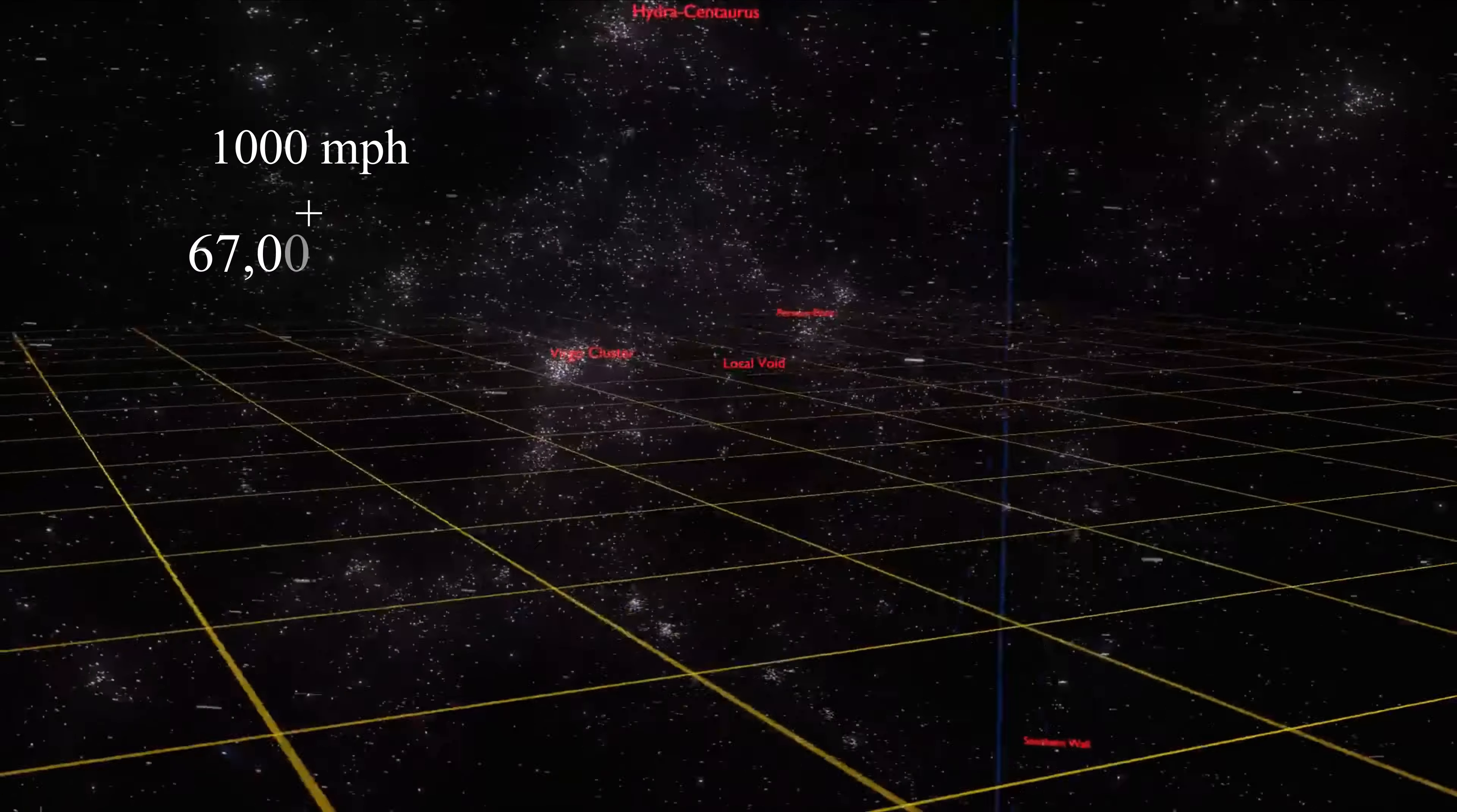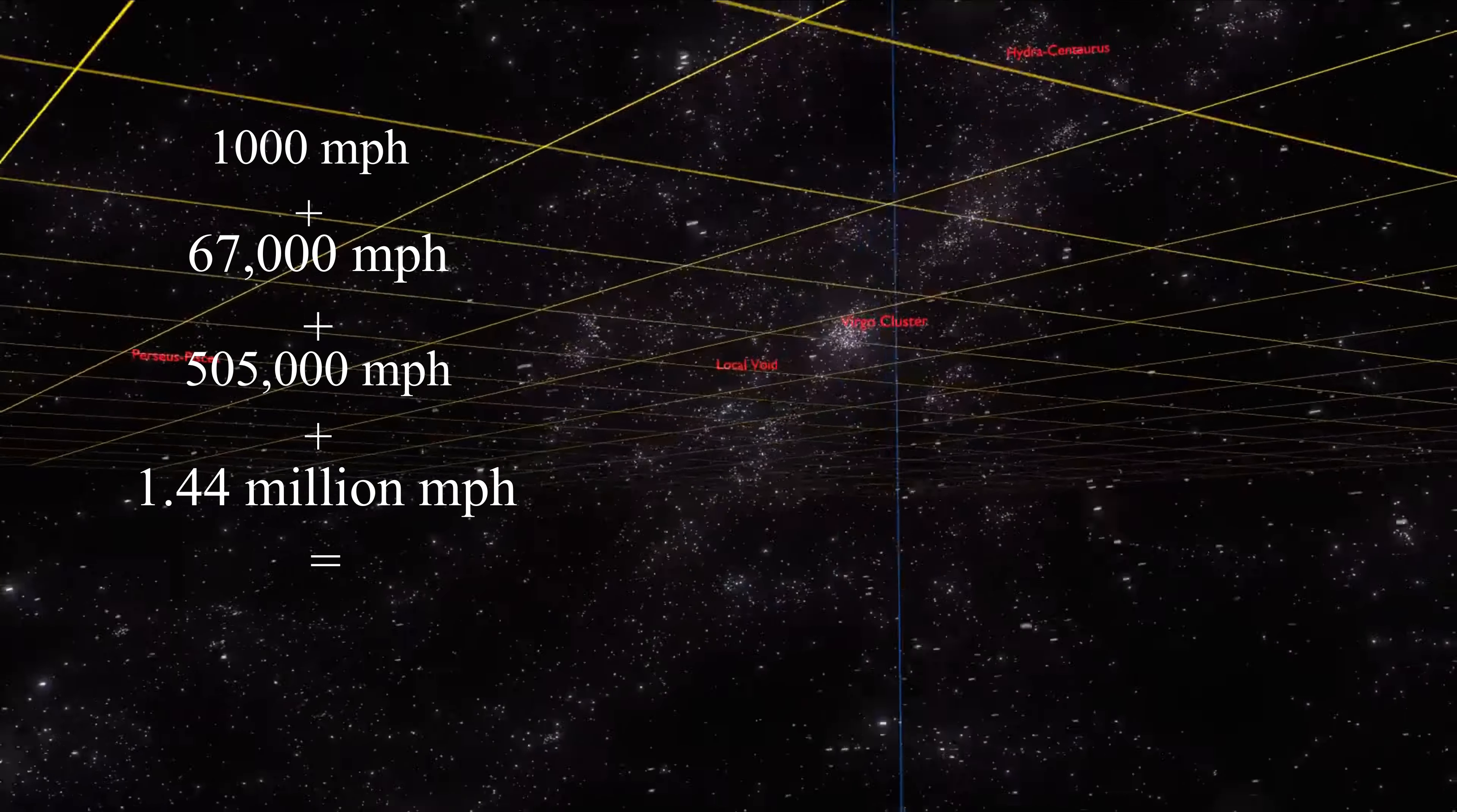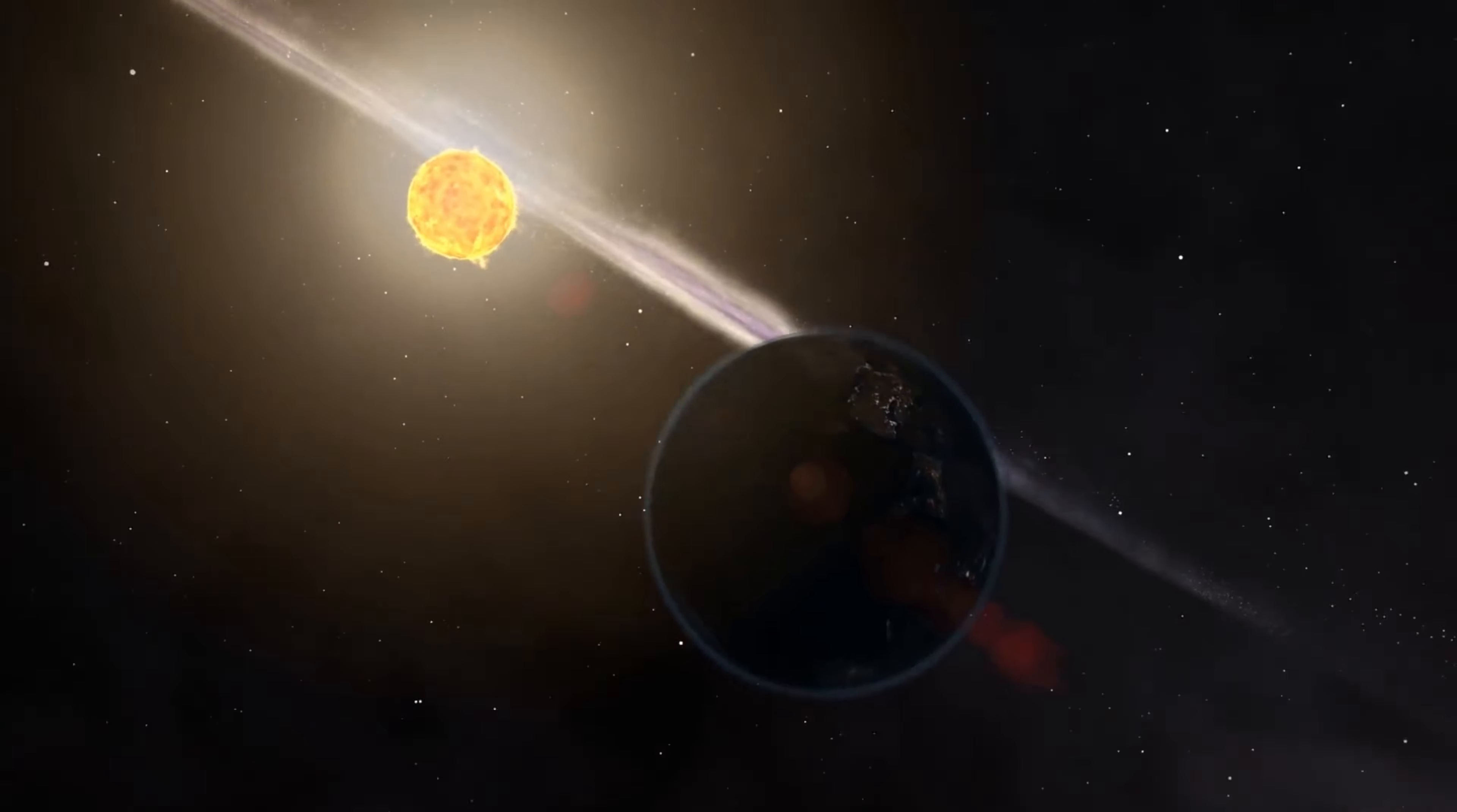So, now if we add all the miles then, you're moving 1,000 miles an hour, plus Earth moving around the sun at 67,000 miles an hour, plus our solar system moving around the Milky Way galactic center at 505,000 miles an hour, plus our galaxy moving at 1.44 million miles an hour, equals about 2.01 million miles per hour, or about 560 miles every second. It's amazing, and kind of incredible.